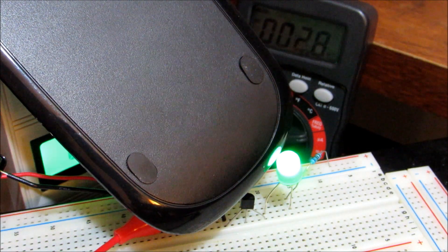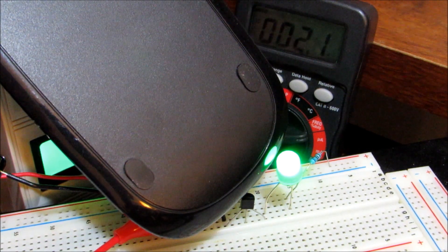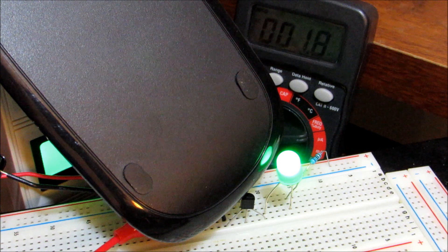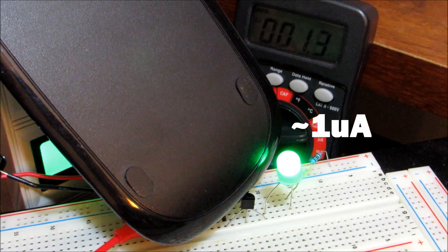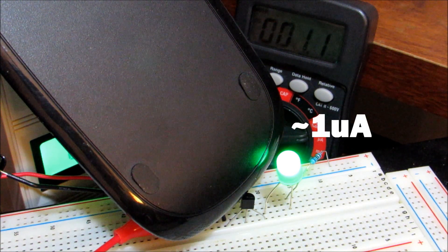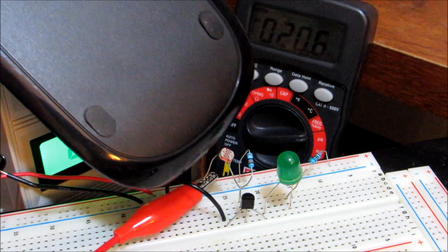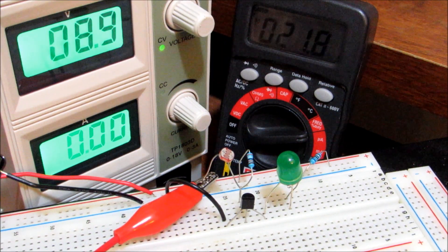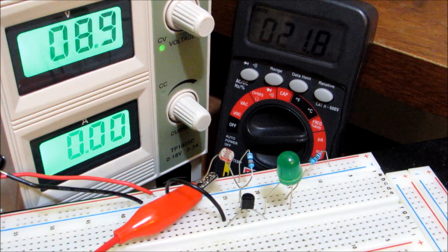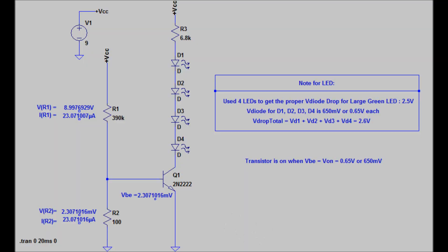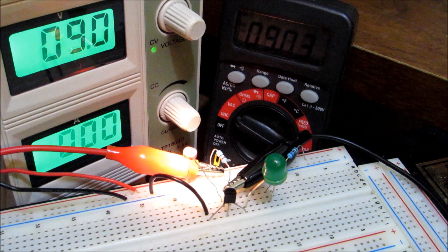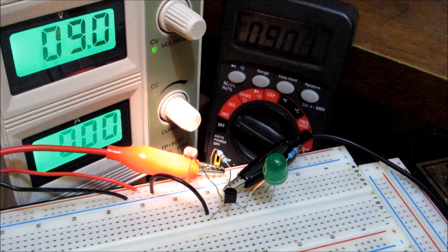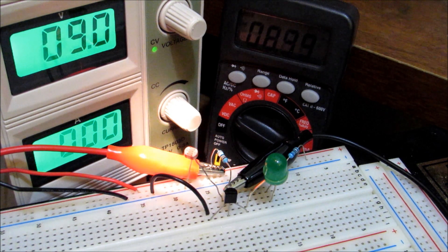R1 in this circuit acts as a crude current source. Before moving on to the output stage, let's take a quick look at when the photoresistor is directly exposed to the flashlight. The value of the photoresistor when directly exposed to the flashlight is very low. In the simulation, the voltage across R1 is very close to the supply voltage, and when we measure the actual circuit we see a similar result matching the simulation.